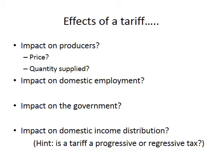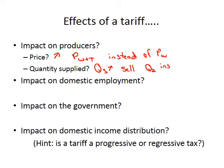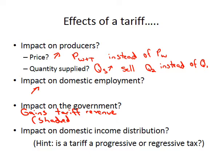The impact on producers: the price has gone up to PW plus T instead of PW, and producers respond to the higher price — so quantity supplied rises and they now produce and sell Q2 instead of Q1. The impact on domestic employment is positive — it has gone up. The government gains tariff revenue, represented by the shaded box, and with increased employment they will also be paying less in unemployment benefits.